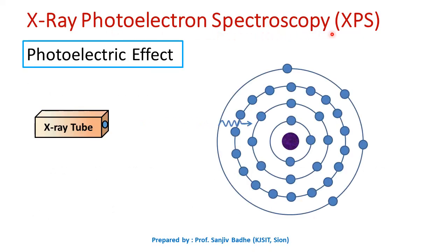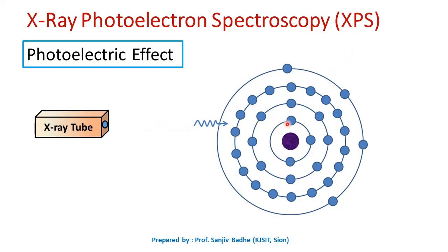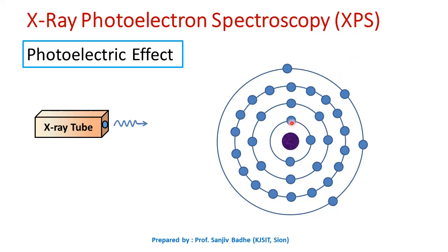As X-ray photoelectron spectroscopy is based on the photoelectric effect, let us first try to understand this photoelectric effect. In a photoelectric effect, when electromagnetic radiation such as X-rays is made incident on the sample surface, they penetrate into the atoms of the sample surface. The core electrons of the atom absorb the X-ray photon energy, and if the incident photon energy is high enough, then these core electrons are knocked off the atom.